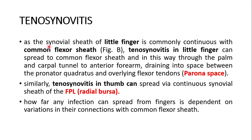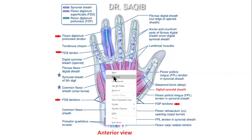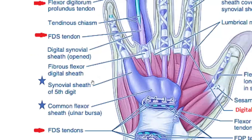As the synovial sheath of the little finger is commonly continuous with the common flexor sheath, tenosynovitis in the little finger can spread to the common flexor sheath, and in this way through the palm and carpal tunnel to the anterior forearm, draining into the space between the pronator quadratus and the overlying flexor tendons — which is the space of Parona. This is the common flexor sheath, and this is the digital synovial sheath of the little finger — the synovial sheath of the fifth digit, which is commonly continuous with the common flexor sheath, the ulnar bursa.